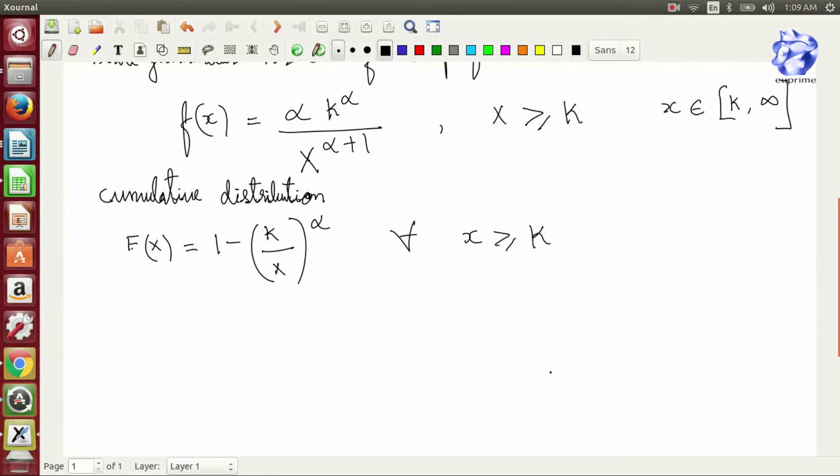The mean or expected value of X is given by alpha K divided by (alpha minus one) for alpha greater than one, and infinity for alpha less than or equal to one.